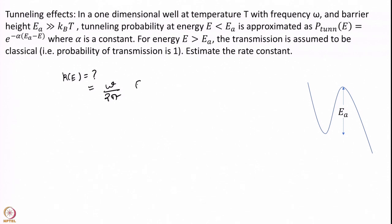For E greater than Ea, K(E) equals omega over 2 pi. If my energy is above this barrier point, my rate is omega over 2 pi because omega over 2 pi is the frequency of hitting the transition state. Sitting at the transition state, in every one time period I will hit this point exactly once in the forward direction. This is the transition state approximation — I only look at the rate in the forward direction.